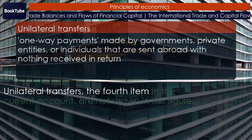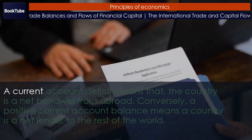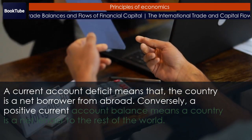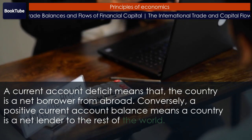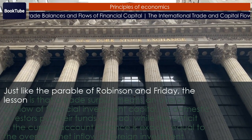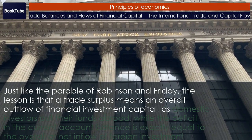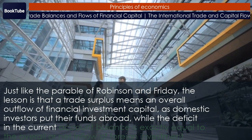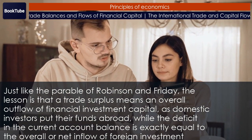Unilateral transfers, the fourth item in the current account, are not shown in this figure. A current account deficit means that the country is a net borrower from abroad. Conversely, a positive current account balance means a country is a net lender to the rest of the world. Just like the parable of Robinson and Friday, the lesson is that a trade surplus means an overall outflow of financial investment capital, as domestic investors put their funds abroad, while the deficit in the current account balance is exactly equal to the overall or net inflow of foreign investment capital from abroad.